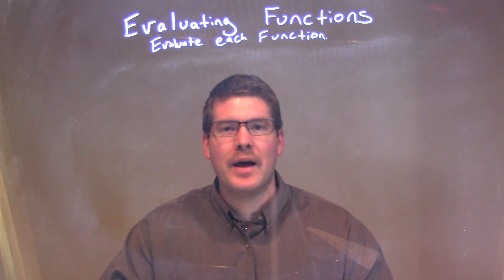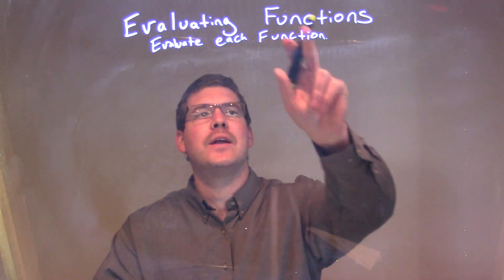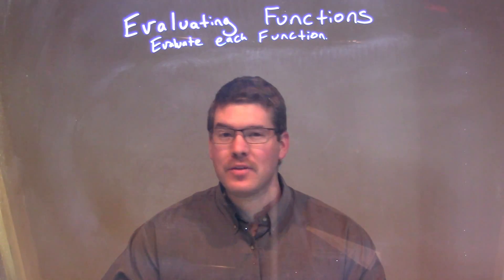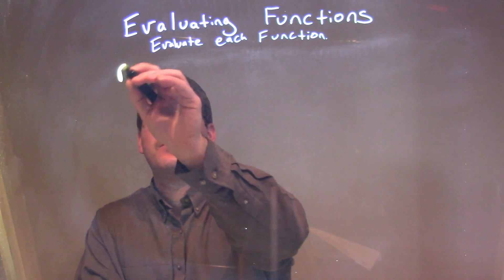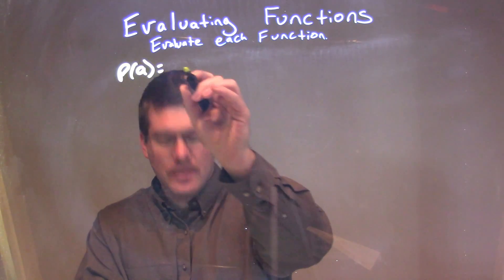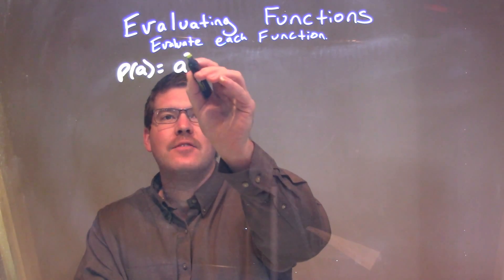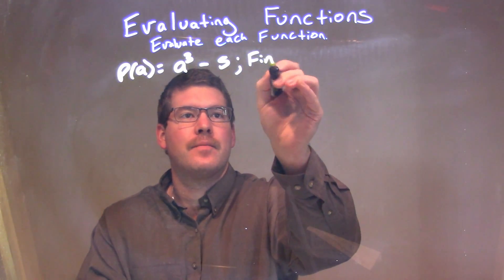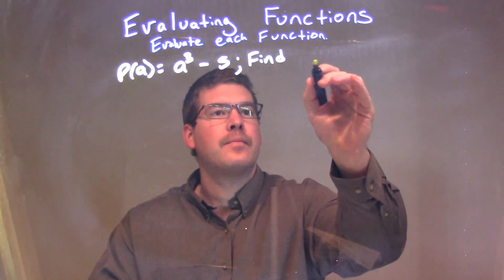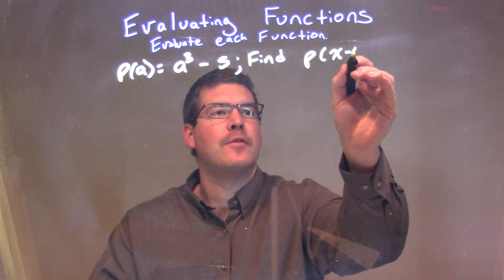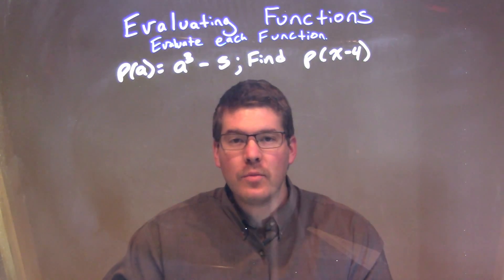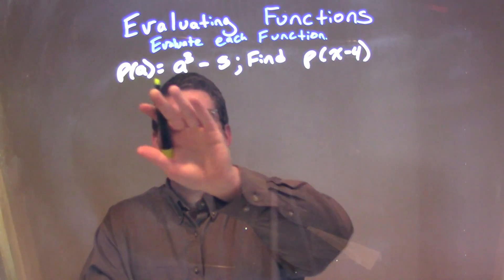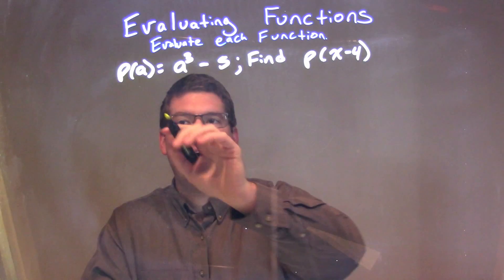Hi, I'm Sean Gannett, and this is MinuteMath. Today we're going to learn about evaluating functions, and we're going to evaluate each function. So, if I was given this function — p of a is equal to a to the third minus 5 — and we want to find p of x minus 4. Since we want to find p of x minus 4, we need to substitute x minus 4 for every single a.